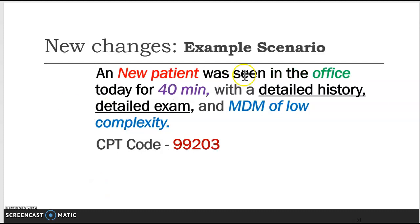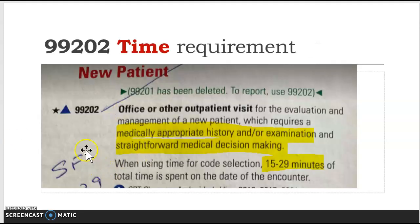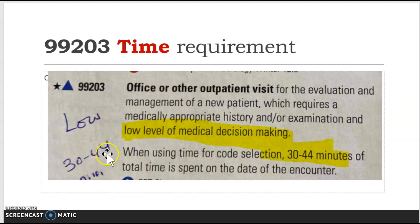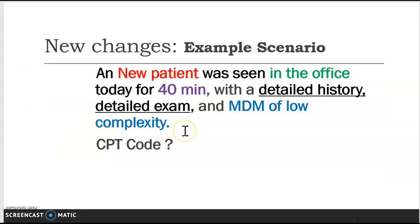That matches my low complexity, and it also matches my 40 minutes. So the code I am going to select is 99203. If you didn't understand that, pause the video and go back to review the details with the book in hand. Write small notes next to the code — I wrote down 'low' and '30 to 44 minutes' so I can remember without reading everything again. These are the only two things required to code with specificity, and you must match all these keywords.